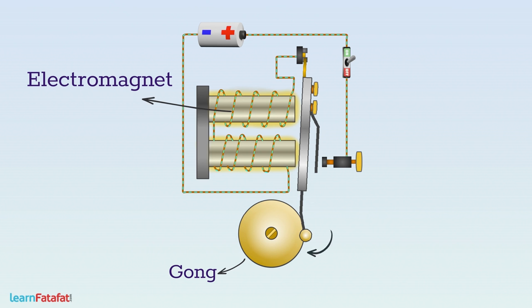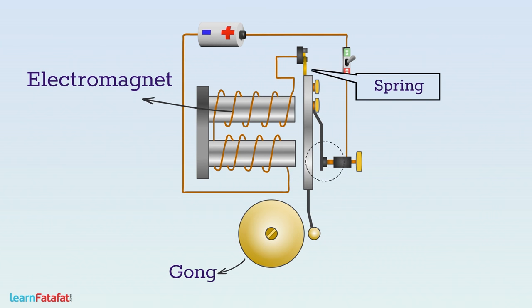However, due to this movement, the iron strip goes away from the screw, breaking the electric circuit. So current stops and the coil does not attract the iron strip. The springy metal then brings the strip to its initial position.